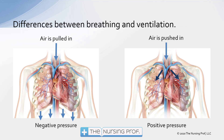With positive pressure ventilation, we're pushing air in and generating positive pressure which also causes positive pressure on the heart and mediastinum, decreasing venous return back to the heart. In many cases that will cause the patient to have decreased cardiac output. However, in a patient who has heart failure, decreasing venous return to the heart may actually be helpful and you may see an increase in the patient's cardiac output as a result.